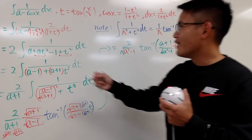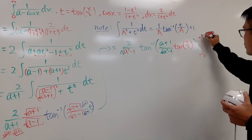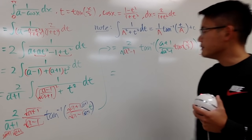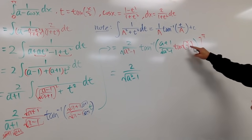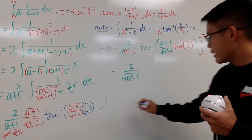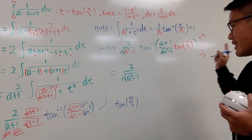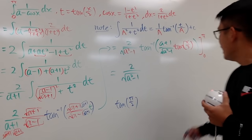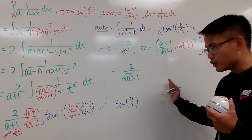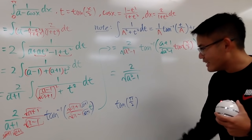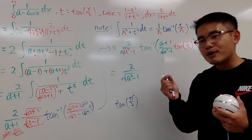Now let's plug in the limits 0 to π. We evaluate from 0 to π. However, plugging in π means we need tan(π/2), which is undefined — so this is technically an improper integral. We need to take the limit as x approaches π from the left, meaning π/2 minus, which is a value slightly less than π/2.